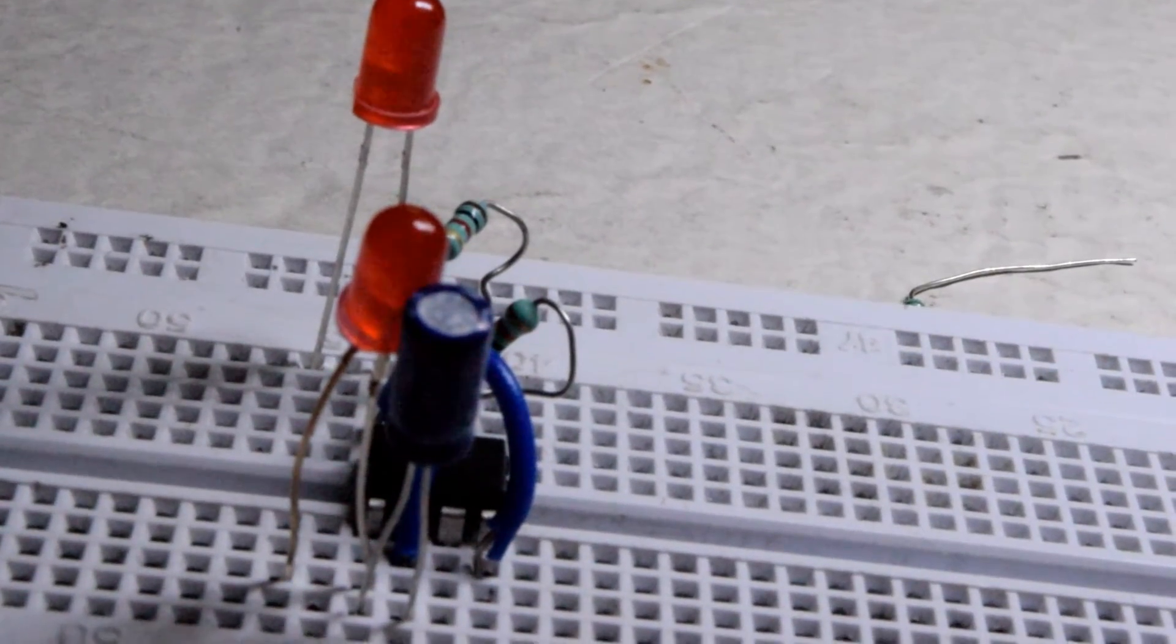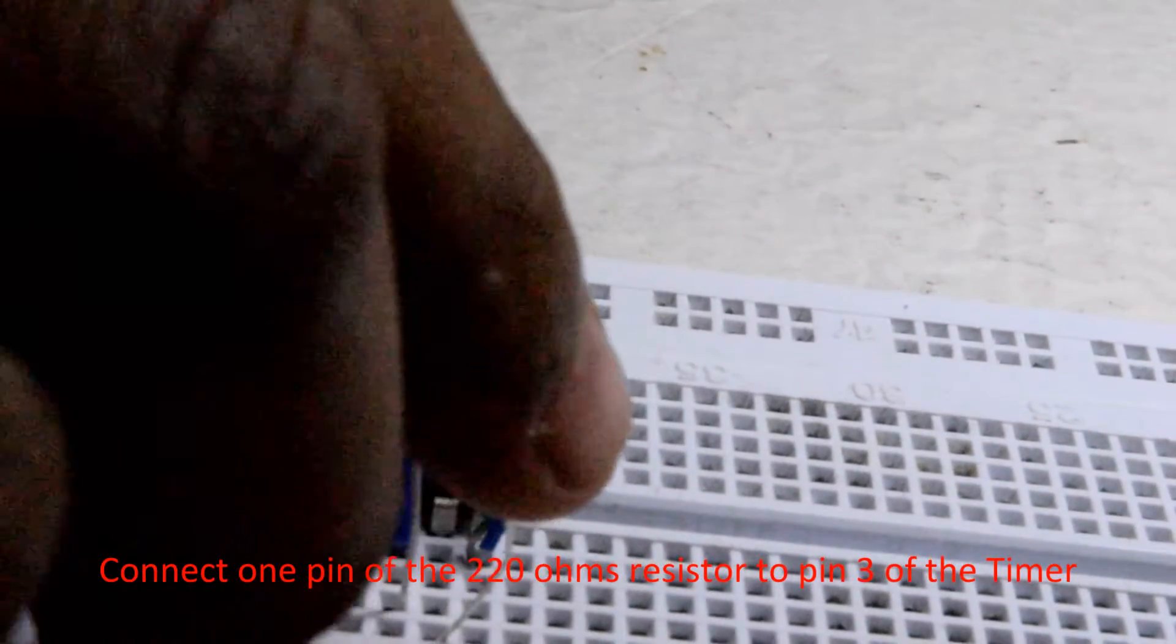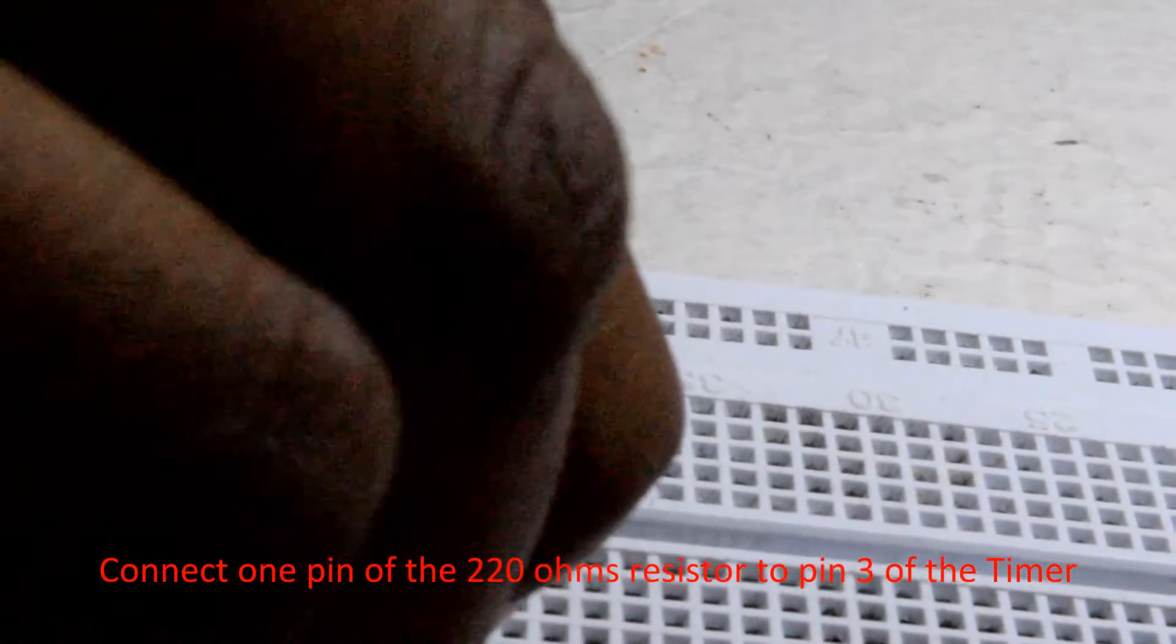Take your 220 ohms resistor. Connect one pin to pin 3 of the IC and the other pin to any other hole on the breadboard.